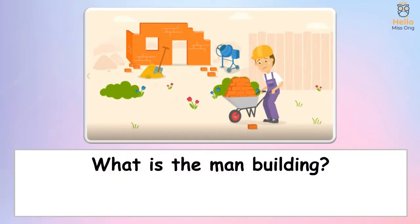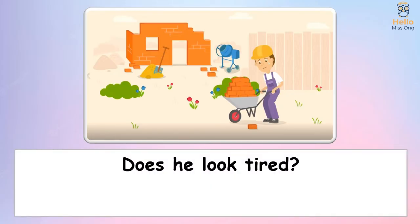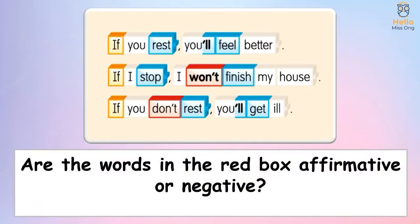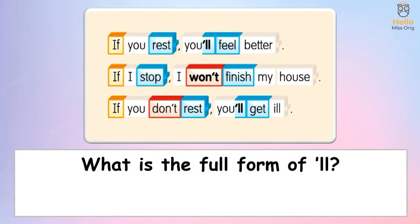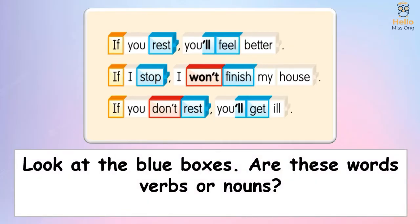What is the man building? He is building a house. Does he look tired? Yes, he does. What word is at the beginning of each sentence in the orange box? If. Are the words in the red box affirmative or negative? Negative. What is the full form of 'll? Will. Look at the blue boxes. Are these words verbs or nouns?